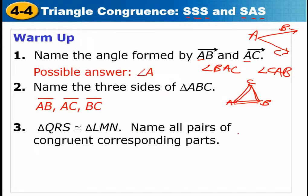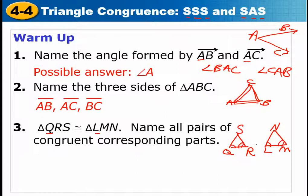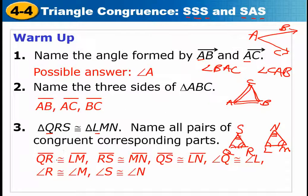The last warm-up says that triangle QRS is congruent to triangle LMN, and then it says name all pairs of congruent corresponding parts. Angle Q is congruent to angle L, angle R is congruent to angle M, and angle S is congruent to angle N. For sides: side QR is congruent to LM, side RS is congruent to MN, and side QS is congruent to LN. So you'd have three congruent sides and three congruent angles.